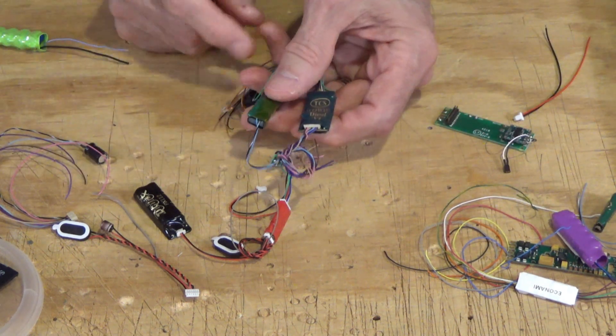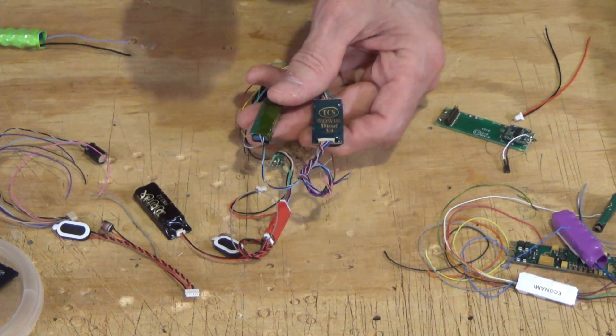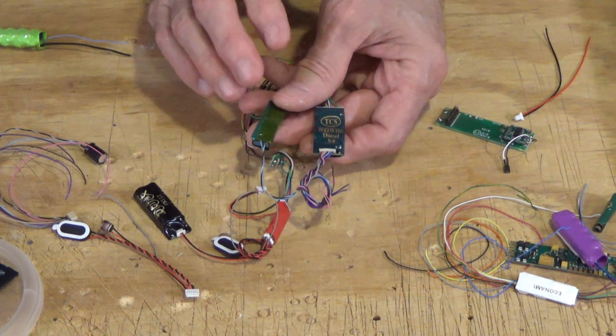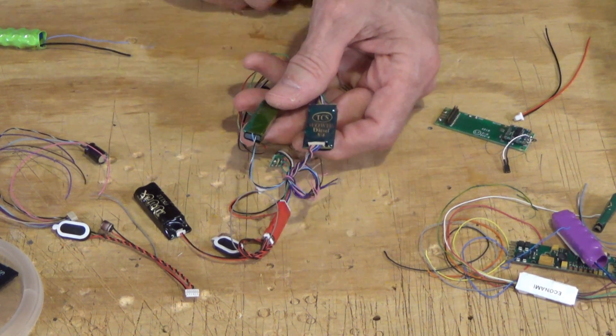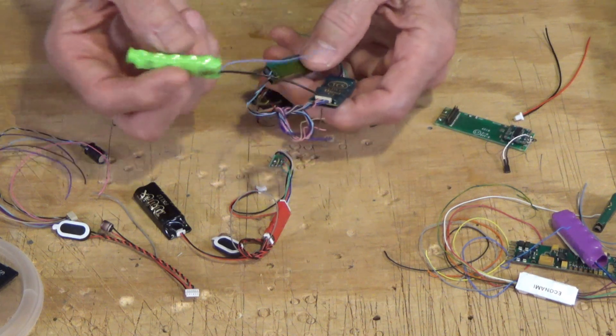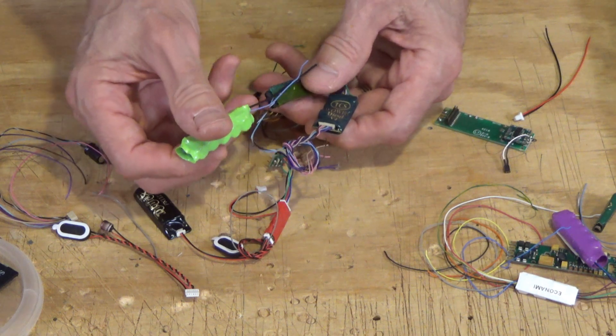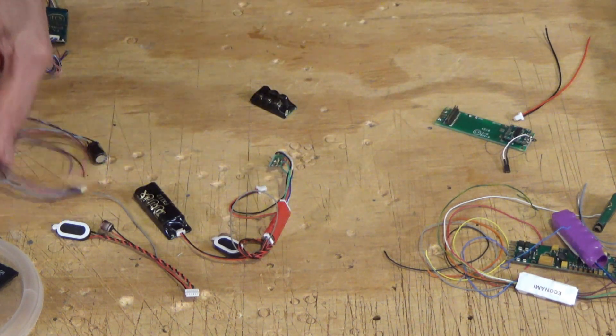So you can make those connections, but always remember the polarity. I talk about this and show a lot of examples in the October 2019 DCC Corner Column in Model Railroader Magazine. You could connect your homemade keep-alive here using the blue and black wires as shown. Let's look at a couple of other examples though.